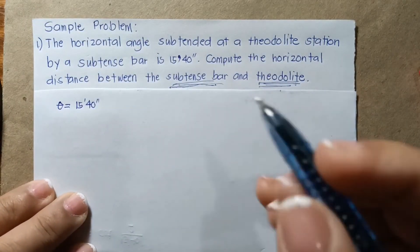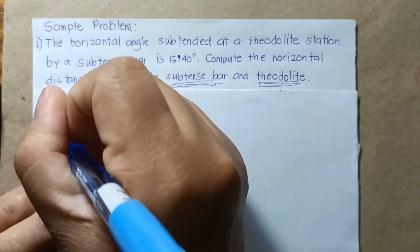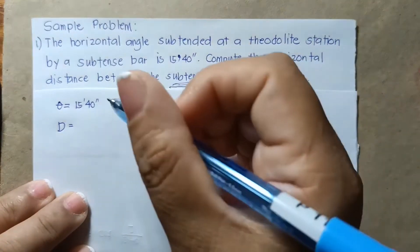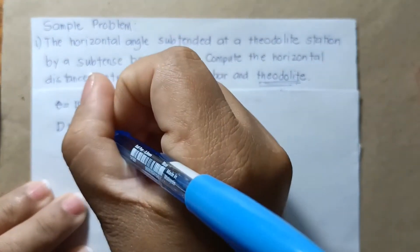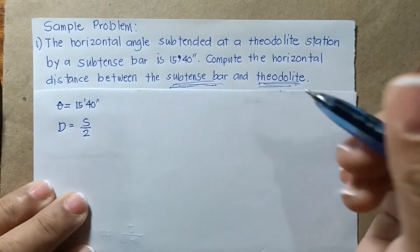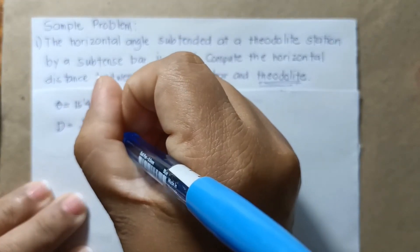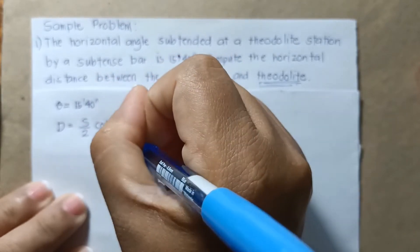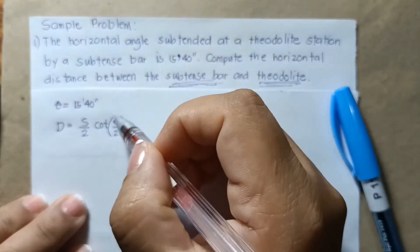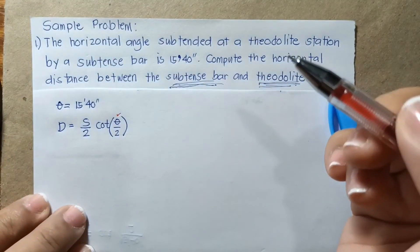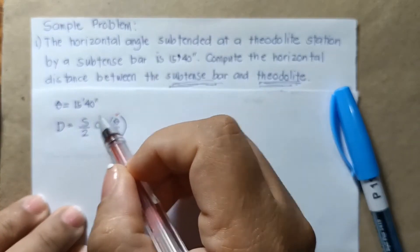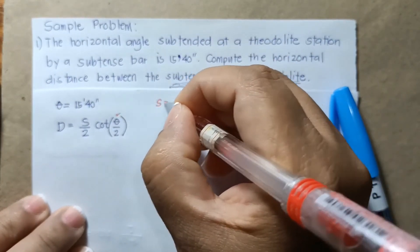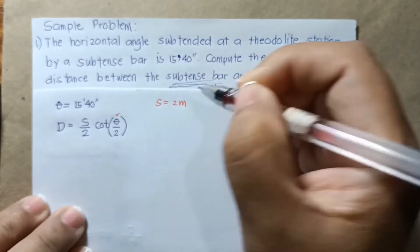The requirement is the distance, denoted as d, which is equal to s over 2 times the cotangent of theta over 2. We have the value of theta which is 15 minutes and 40 seconds. The value of s is not given; however, we know that s is equal to 2 meters.